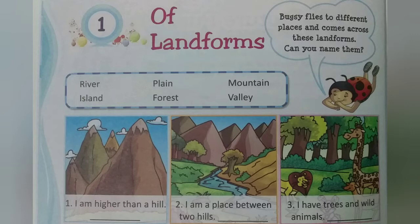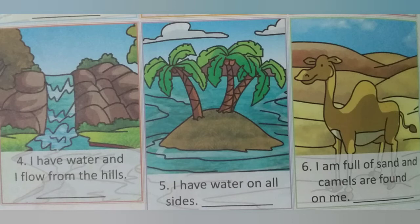Next, Number 2: I am a place between two hills. Answer is Valley. Next, Number 3: I have trees and wild animals. Answer is Forest. Next, Number 4: I have water and I flow from the hills. Answer is River.